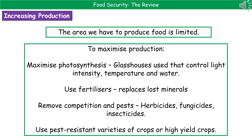A key problem is that the area we have to produce food for our ever-increasing population is limited. As the population expands, they need houses and industry to support them, which means we can't use all available space just for growing food. We have to find ways to maximize production on the space we do have — for example, maximizing photosynthesis in plants.